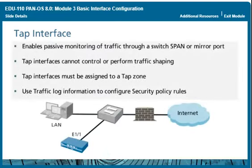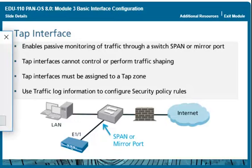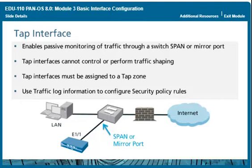The firewall can use a Tap interface to connect to a switch's SPAN or mirror port. A Tap interface passively collects and logs monitored traffic to the firewall's traffic log. Tap mode deployment is often used to initially discover the types of application and user traffic flowing across a network. Because traffic is flowing to the firewall but not through it, a Tap interface cannot block traffic or perform traffic shaping. An advantage of using a Tap interface is that it requires no network address changes. If the SPAN or mirror port passes encrypted traffic, the Tap interface supports only SSL inbound decryption.